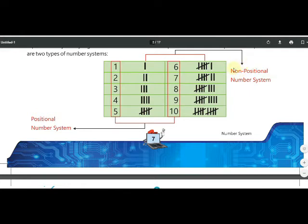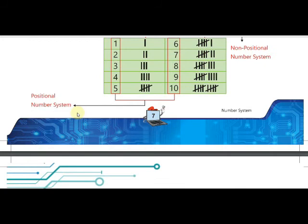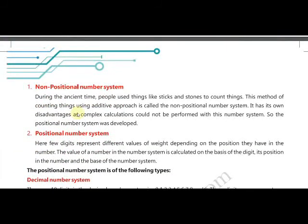In the non-positional system, people used sticks or stones to count, but afterwards it was upgraded to the positional numbering system. In the positional numbering system, a particular thing or quantity is represented with a specific weight or digit. For example, having seven pens means the weight seven is assigned to that group — there are seven pens. To represent such a group, we use the positional number system.